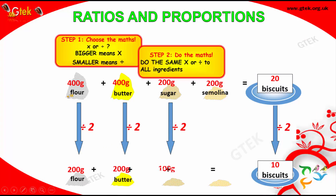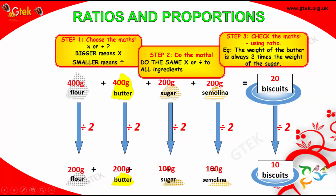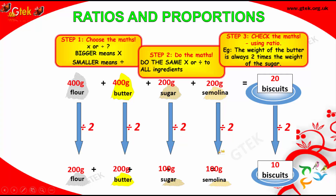I have 400g flour, 400g butter, 200g sugar, and 200g semolina to make 20 biscuits. They are looking for 10 biscuits — what are the ingredients? The number is reduced, so you have to divide. 20 divided by 2 gives 10. Apply the same logic: 400 divided by 2 is 200, 400 divided by 2 is 200, 200 divided by 2 is 100, 200 divided by 2 is 100. So: 200g flour, 200g butter, 100g sugar, and 100g semolina to make 10 biscuits.